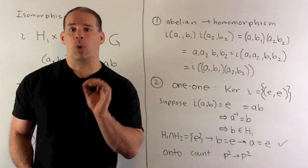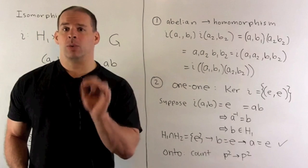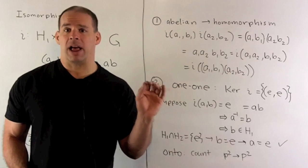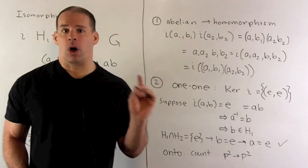Now since I have a one-to-one map going from a set with p squared elements to a set with p squared elements, that means we're also onto.